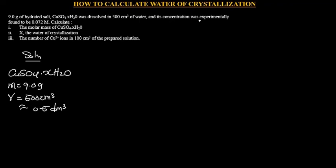Its concentration was experimentally found to be 0.072 molar. So we have concentration C equal to 0.072 molar. Now the first question says to calculate the molar mass of copper sulfate dot XH₂O.